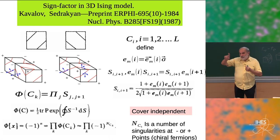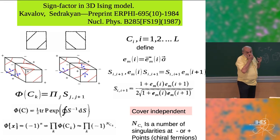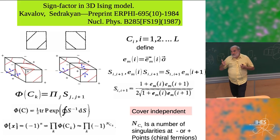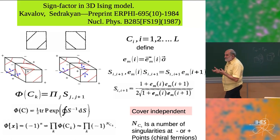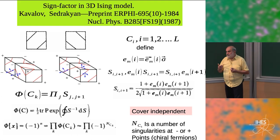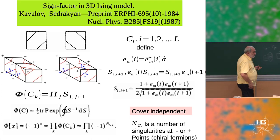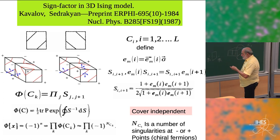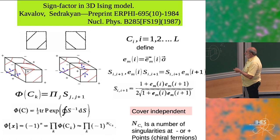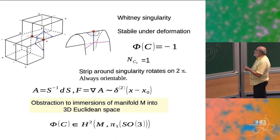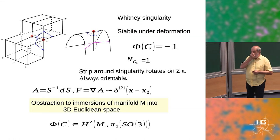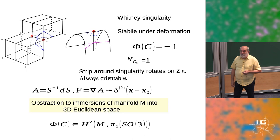This factor is plus or minus one because when you go around and come back, the tangent vectors are the same, but everything is written in spinor representation — a representation of SU2. Therefore you can come back to the same vectors with plus or minus sign, since SU2 has center Z2. The key point is: if this curve goes around a self-intersection point, it will produce minus one.